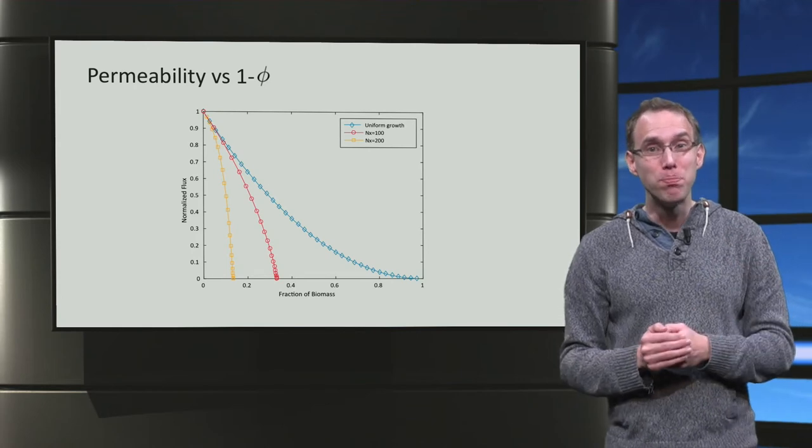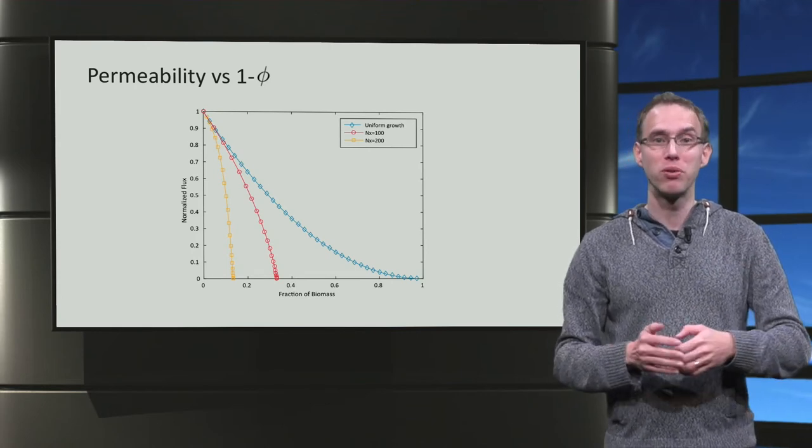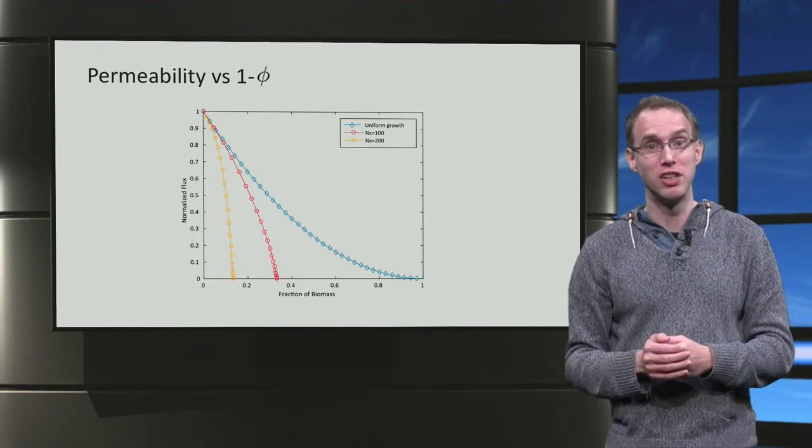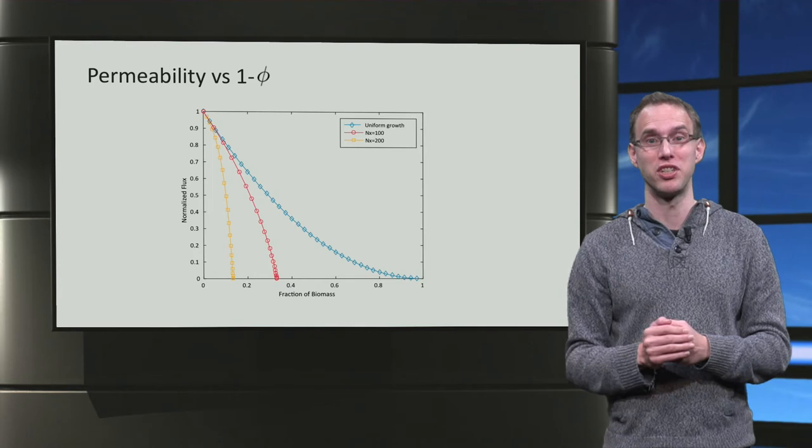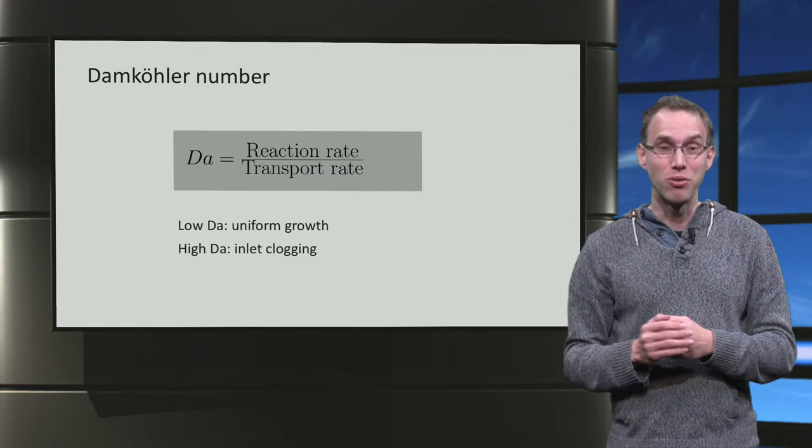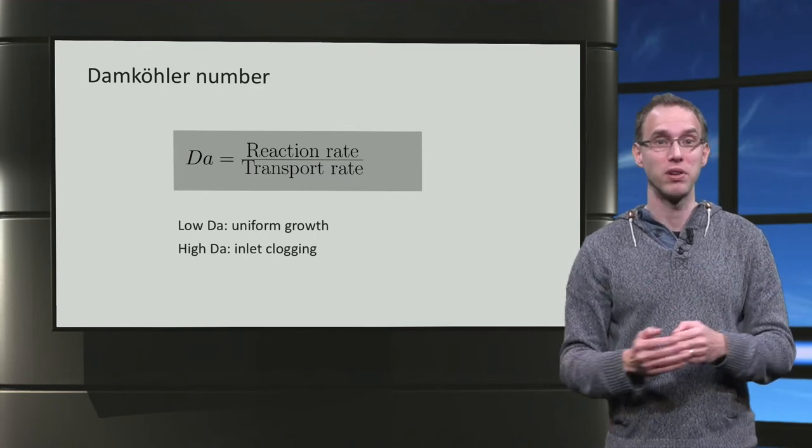Now, this point of departure of uniform growth seems to depend on all kinds of physical and numerical parameters, but we are able to identify one dimensionless parameter that determines its transition. This parameter is the so-called Damköhler number. It is the quotient of the reaction rate and the transport rate.